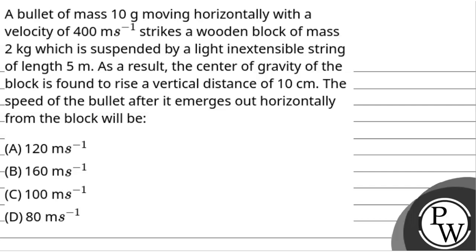The question says that a bullet of mass 10 gram moving horizontally with a velocity of 400 meter per second strikes a wooden block of mass 2 kg which is suspended by a light inextensible string of length 5 meter. As a result, the center of gravity of the block is found to rise a vertical distance of 10 cm. The speed of the bullet after it emerges out horizontally from the block will be?